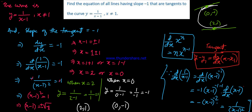So the two points of tangency on the curve where the slope equals minus 1 are (2, 1) and (0, minus 1).